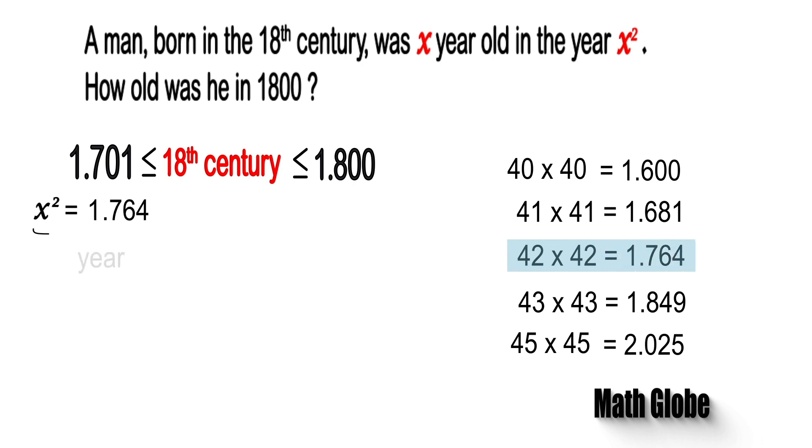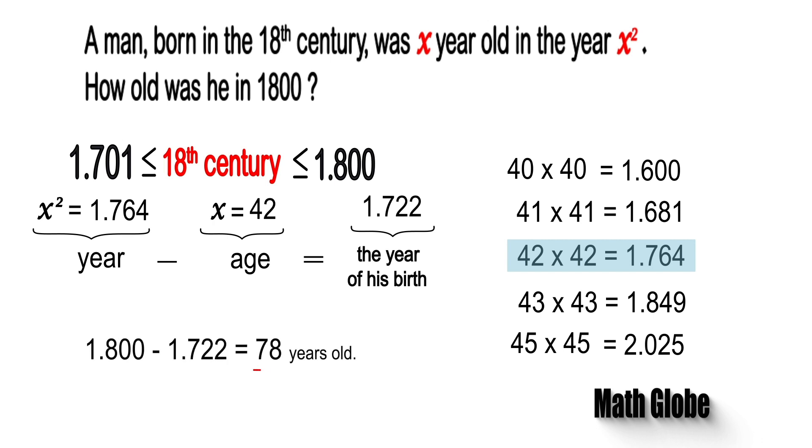Next, let's write the following expression. Therefore, the year of his birth was 1722. Then in 1800, he was 78 years old. So this is the solution.